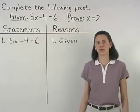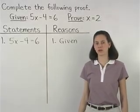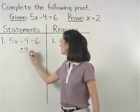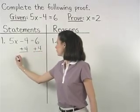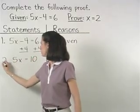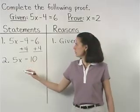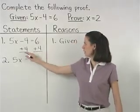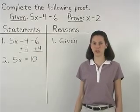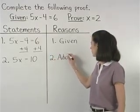Now to complete this proof, we simply solve the equation. Our first step in solving the equation is to add 4 to both sides to get 5x equals 10. So statement 2 is 5x equals 10. And remember, the reason that we can add the same quantity to both sides of an equation is based on the addition property of equality. So reason 2 is the addition property of equality.